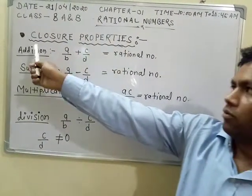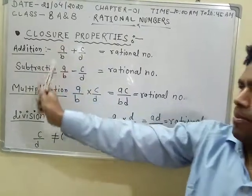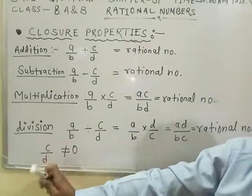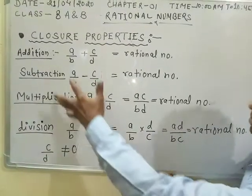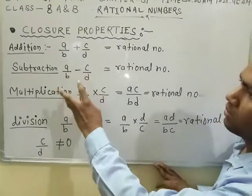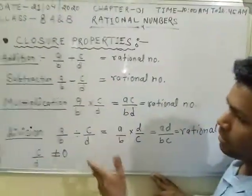And again, subtraction, multiplication, and division. In these properties, we have to check if two rational numbers add, subtract, and multiply.